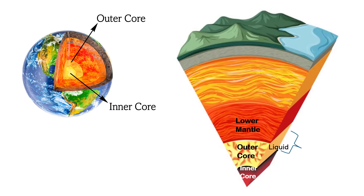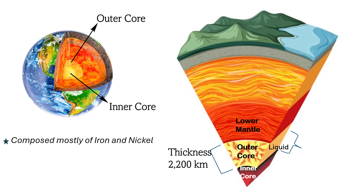Now let's dive into the core of the Earth. The Earth's core is situated at the very center of the planet and is divided into two parts: the outer core and the inner core. The outer core lies between the inner core and the lower mantle, with a thickness of about 2,200 kilometers. It is a liquid layer composed mostly of iron and nickel, with temperatures reaching up to 5,000 degrees Celsius. The outer core is liquid because, while very hot, the pressure is lower than in the inner core, allowing the iron and nickel to melt. It plays a critical role in generating Earth's magnetic field and transferring heat within the planet.